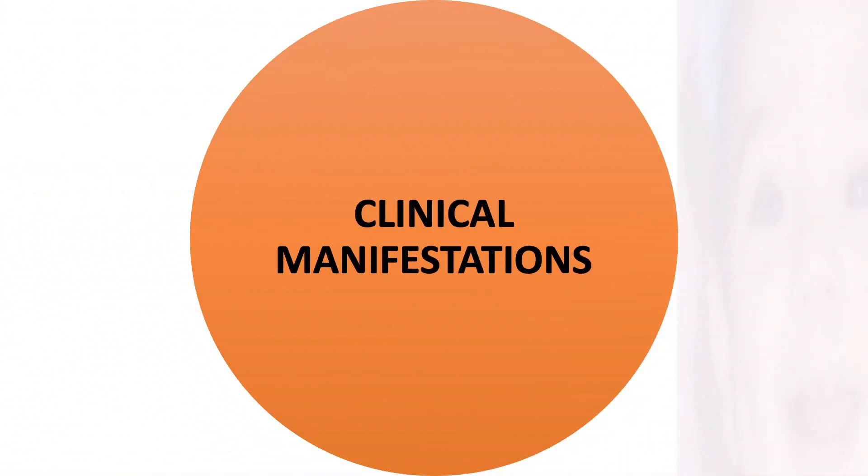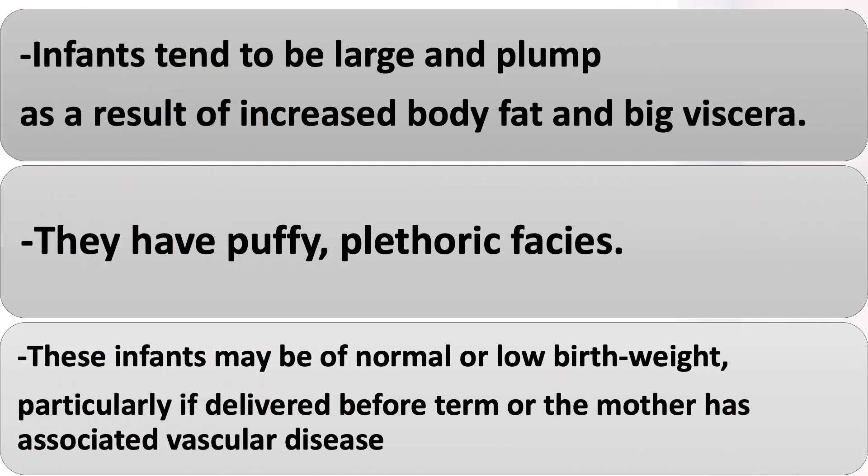Clinical Manifestations: Infants tend to be large and plump as a result of increased body fat and big viscera. They have puffy, plethoric facies. These infants may be of normal or low birth weight, particularly if delivered before term or if the mother has associated vascular disease.